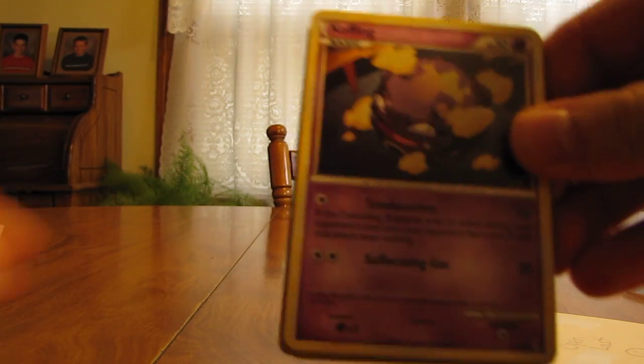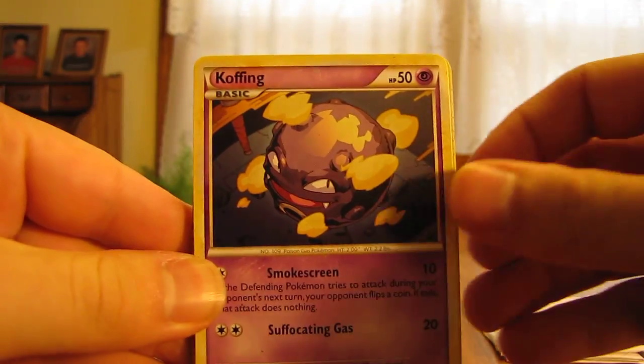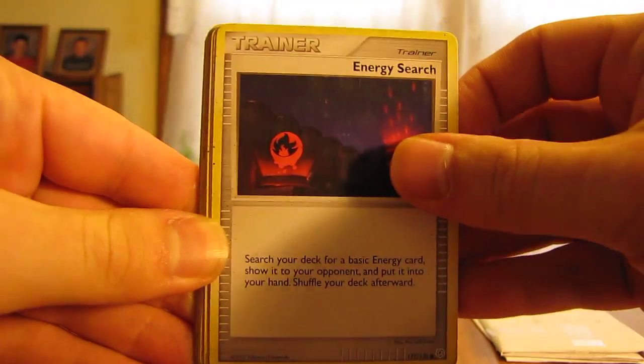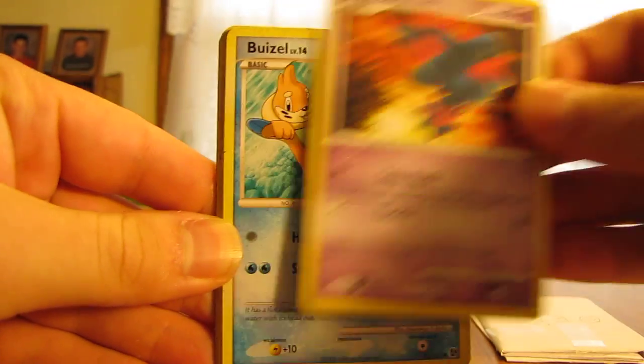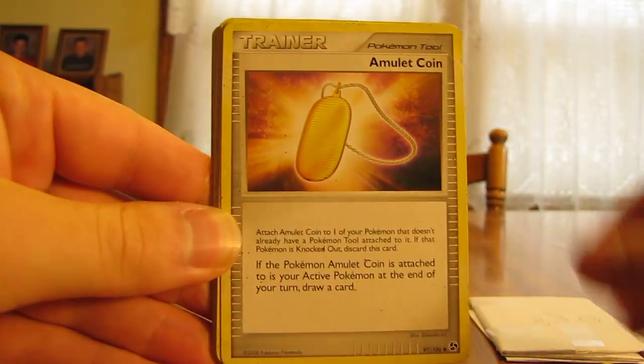There's one that says Open First and Open Last. Started off with Koffing, Energy Search, Misdreavus, Buizel, Amulet Coin, and Growlithe.